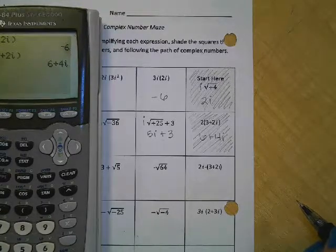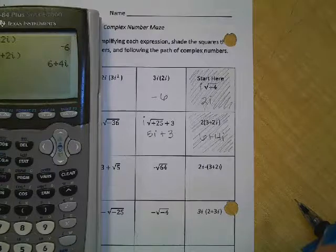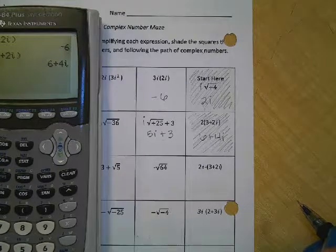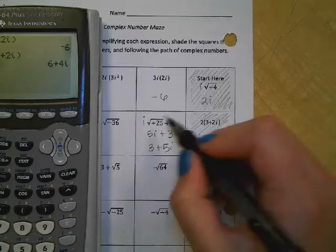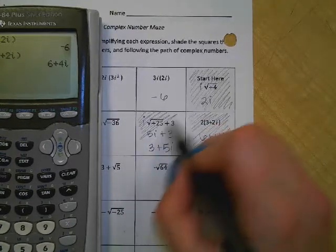No. How do we write complex numbers? 3 plus 5i. We do the real part first, and then the imaginary part. That has an i in it, so I'm going to go ahead and shade.